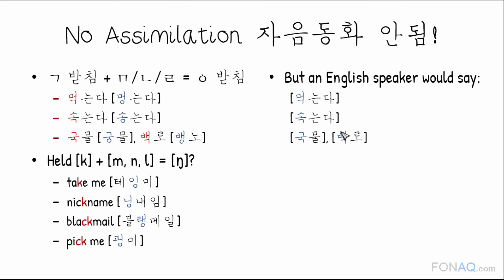That's why when English speakers learn Korean, they tend to say 먹는다, 속는다, 국물, 백로 — without applying assimilation — instead of the correct 먹는다, 속는다, 국물, 백로.